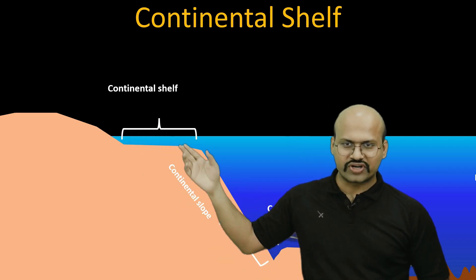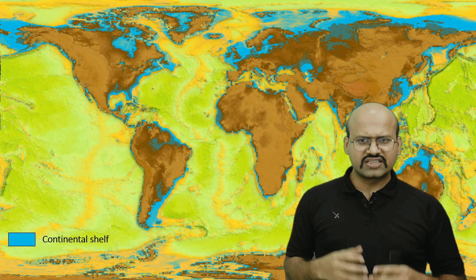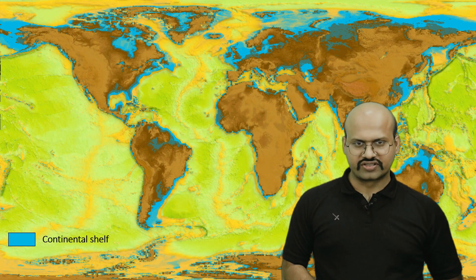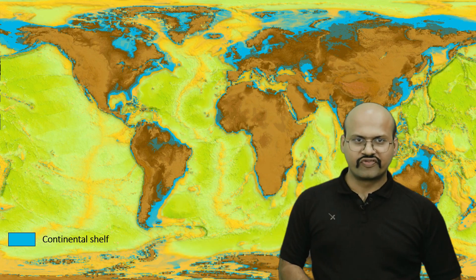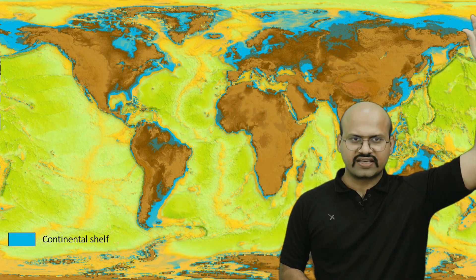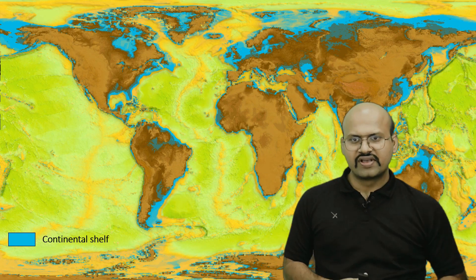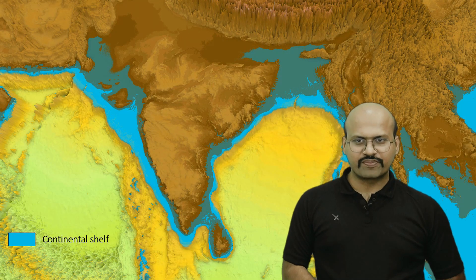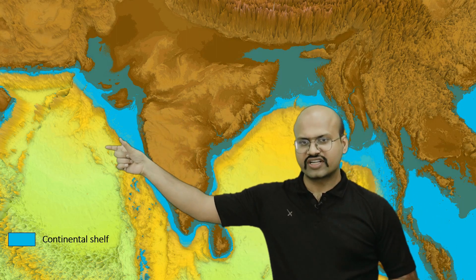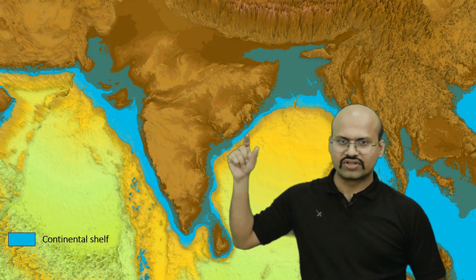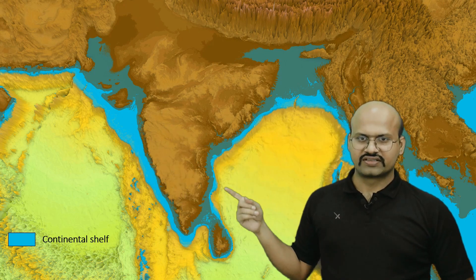Rivers bring a lot of sediments, which are a source of nutrients in this region. The thickness of the continental shelf varies across the world. The continental shelf is very thick in the Siberian region — that is the thickest zone. On the western margin of South America, the continental shelf is almost non-existent because there is a subduction zone where one plate subducts under the South American plate. For the Indian subcontinent, the continental shelf on the western boundary is thicker than on the eastern side.